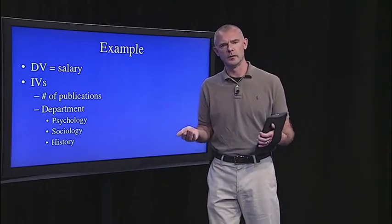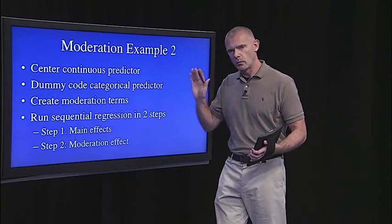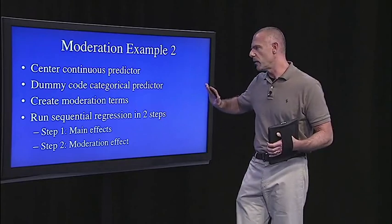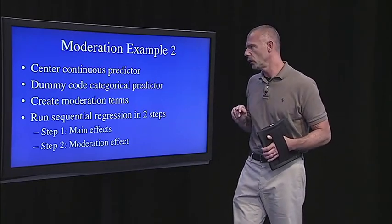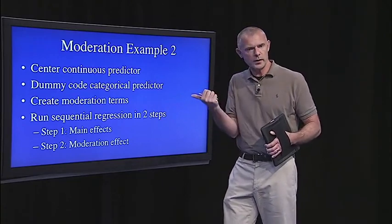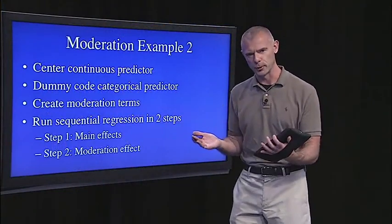We're going to address this question by doing all the steps covered in this lecture. We have one predictor that's continuous and one that's categorical. So we'll center the continuous predictor and create dummy codes for the categorical predictor. We'll then create moderation terms — or interaction terms — and add them into the regression in a second step to see if the moderation effect is significant. This example has it all.